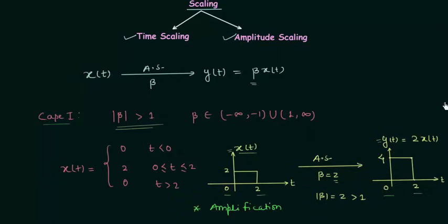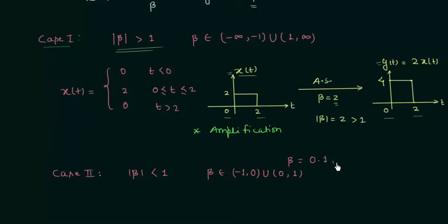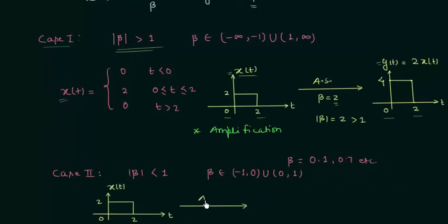Now we will discuss case number 2. In case number 2, the absolute value of β is less than 1. Therefore, the range of β is from minus 1 to 0, union 0 to 1 — meaning β is a number like 0.1 or 0.7; it is not an integer. In this case, I will take the same original signal x(t) and perform amplitude scaling with β equal to 0.5. The modulus of β is 0.5, which is less than 1, so case number 2 is satisfied.